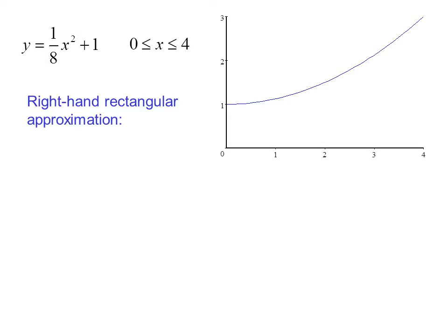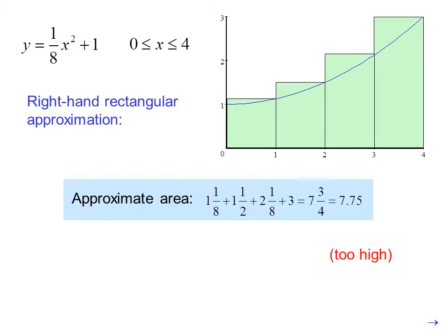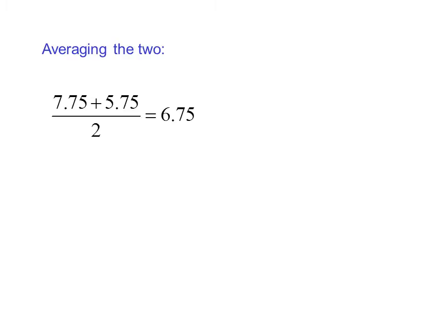The right-hand rectangular approximation gives a result that is too high. Since we have one estimate that is too low and another that is too high, we could try averaging the two. 7.75 plus 5.75 divided by 2 gives us 6.75. We know the correct answer is 6.66 repeating, so our answer is still a little high, but close — only 1.25% error.